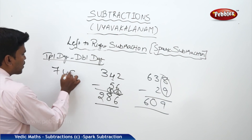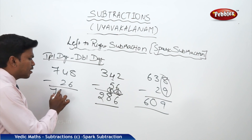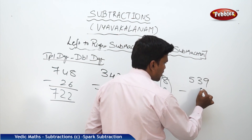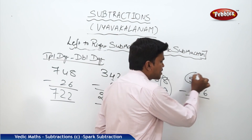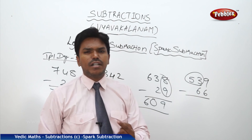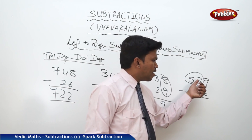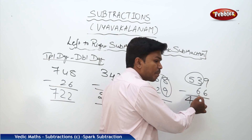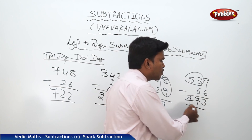Another example: 748 minus 26. Drop 7 — before dropping, check — match. So 7 stays 7. Then 4 minus 2 equals 2, because match. Then 8 minus 6 directly equals 2. Answer is 722. And 539 minus 66: take the first two digits 53 minus 6. Start: 5 is mismatch, so 5 becomes 4. Then 3 plus complement of 6 (which is 4) equals 7. Next numbers are match, so 7 stays 7. Then 9 minus 6 equals 3. Answer is 473.